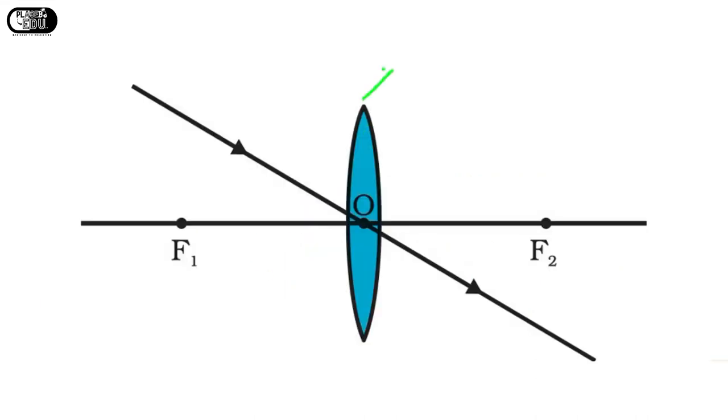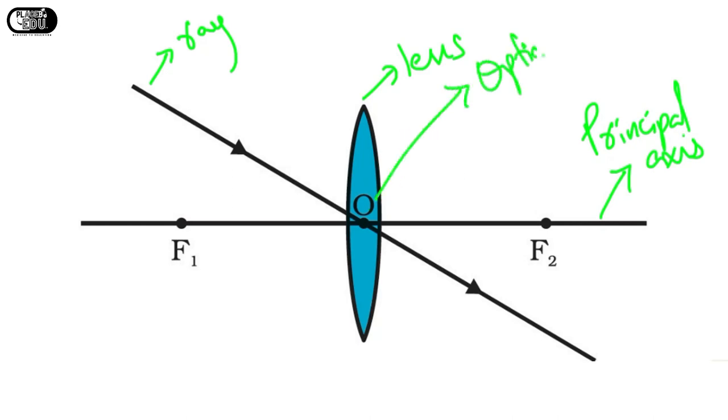This is the lens. This is a light ray, and the line which is straightly passing through O is the principal axis. And O is known as the optical center.